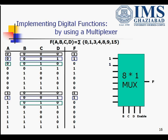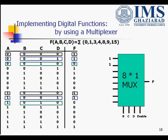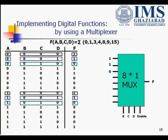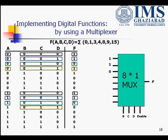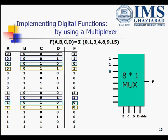In the third combination, b,c,d = 0,1,0: when a=0 the function value is 0, and when a=1 the function value is 0. Irrespective of a, the third input becomes 0. In the fourth combination, b,c,d = 0,1,1: when a=0 the function is 1, and when a=1 the function is 0 — that is, reverse of a — so the fourth input is ā (a-bar).